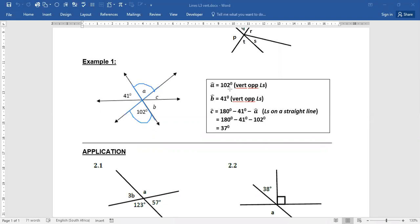So A is equal to 102 degrees, vertically opposite. Now let's see if we can find B. To find B, there's B. And that's 41 degrees. So vertically opposite is B there. And that's your 41 degrees.